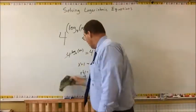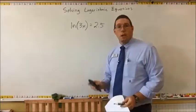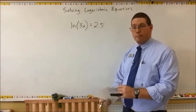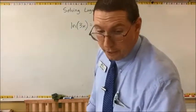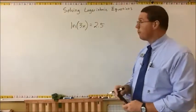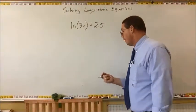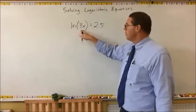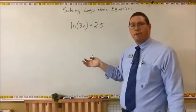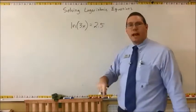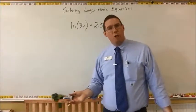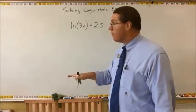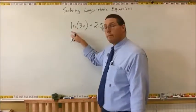Alright, for this one you're going to need a scientific calculator. We have the natural log of 3x is equal to 2.5. What is the base of the natural log? Well, the natural log is equal to log base e, so the base of this logarithm is e. The way we're going to cancel this natural log is we're going to do e to the power of both sides. So now we have e to the power of natural log of 3x is equal to e to the power of 2.5.